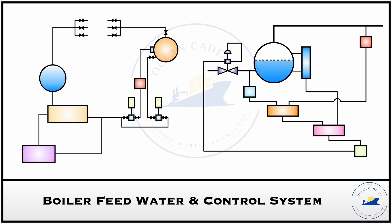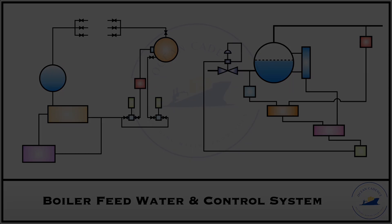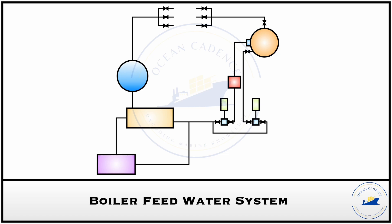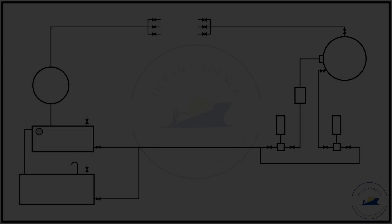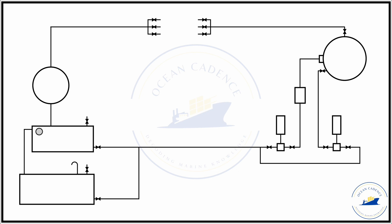Before we discuss the control system, let us first have a look at the basic feed water system for a boiler, that is a medium pressure boiler on board a common merchant vessel. Let us see how it works. So first of all let us focus on the different elements of this circuit.